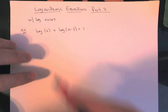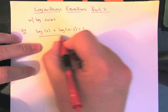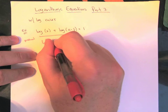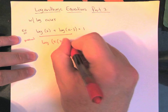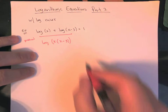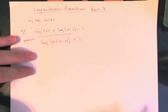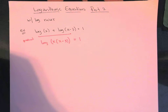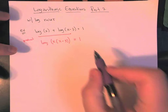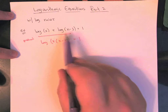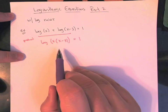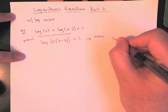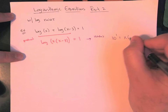Step one: these are two logs added together, so I can use my product rule and combine them into one log of the product x times x minus 3. That allows me to then use my log definition. But I need them combined first — I can't just go 10 to the 1 equals these when they are separated. Once combined, I can say 10 to the 1 is equal to x times x minus 3.